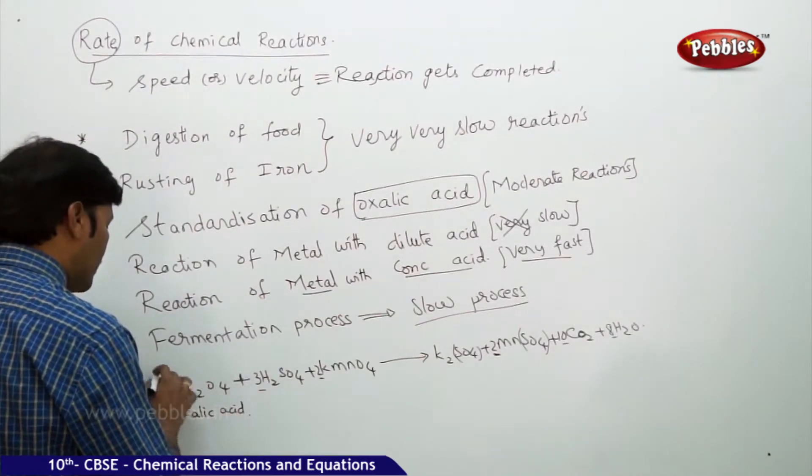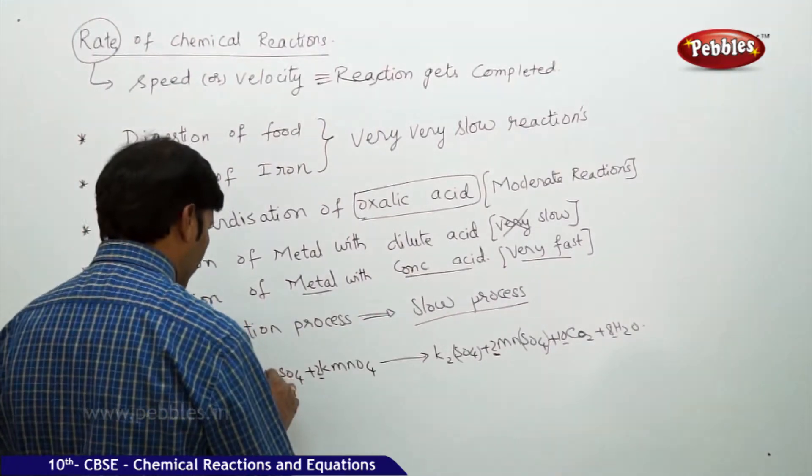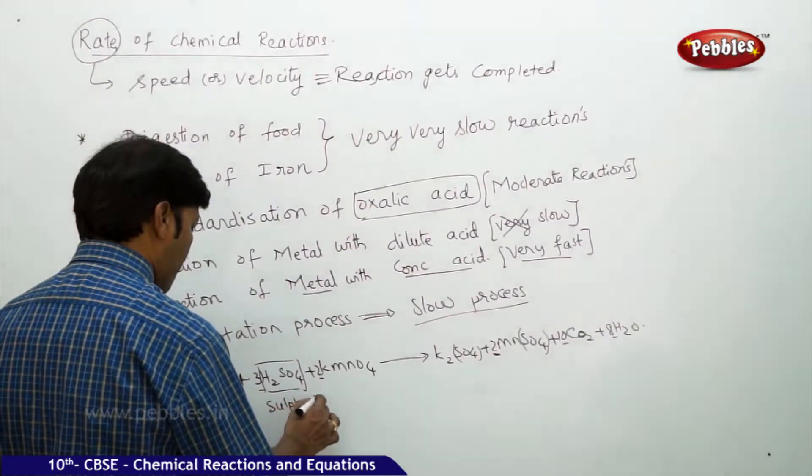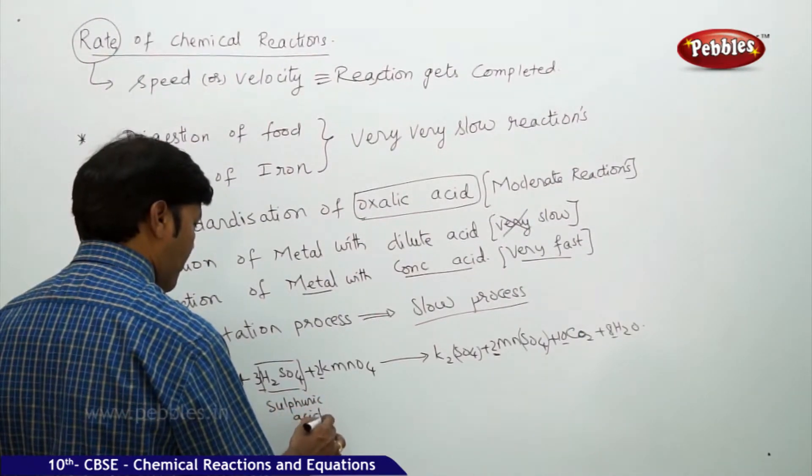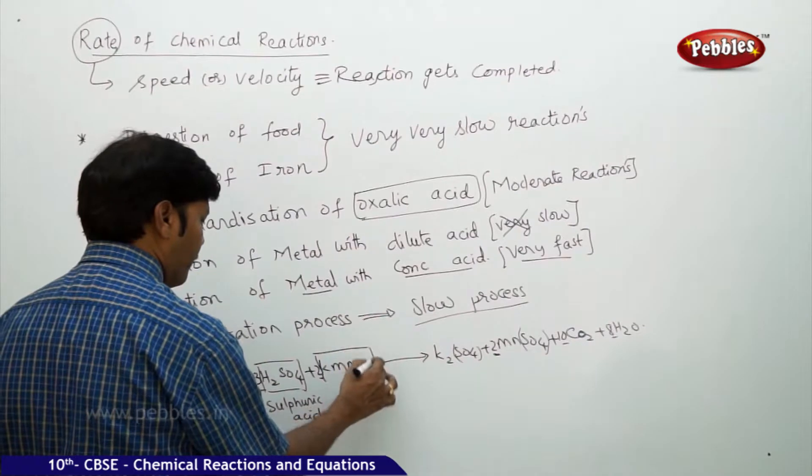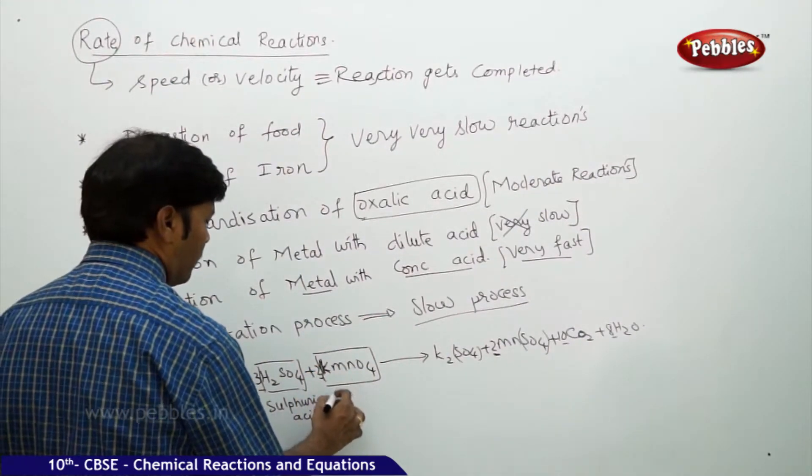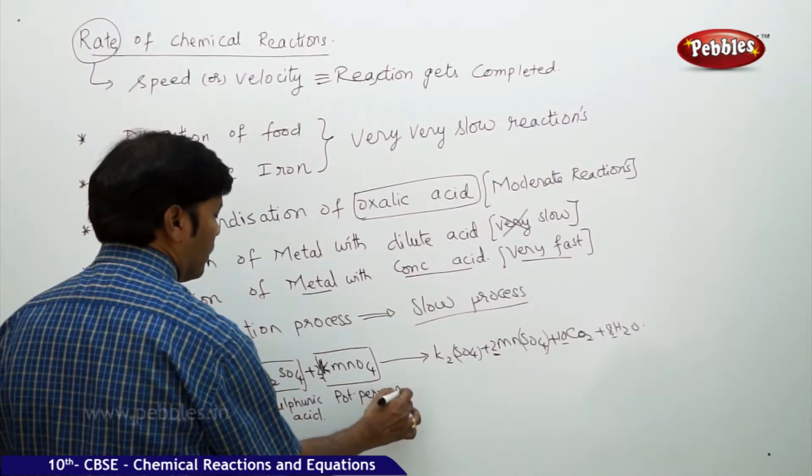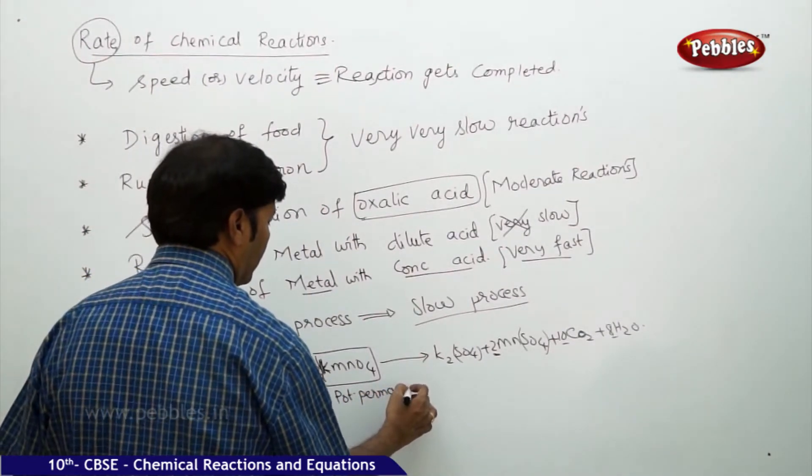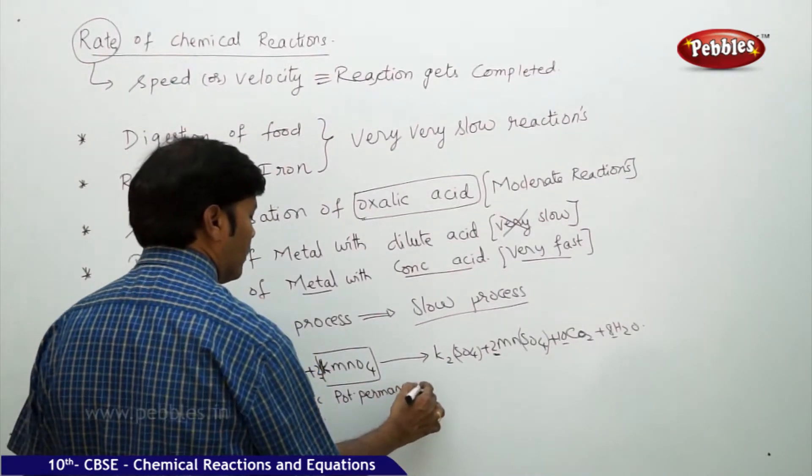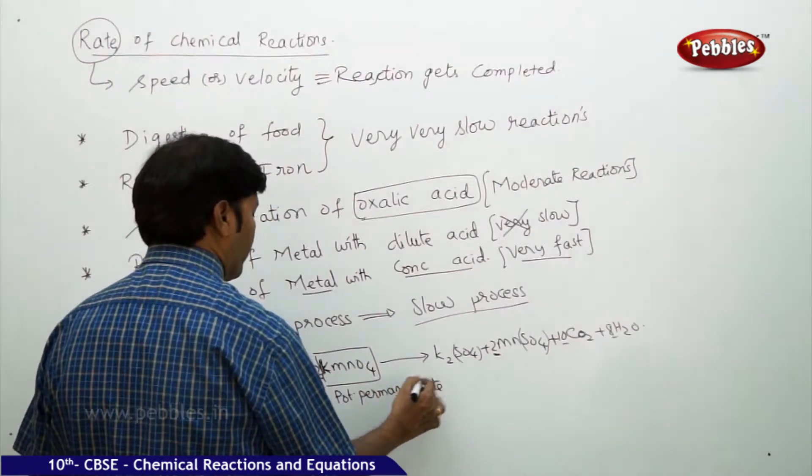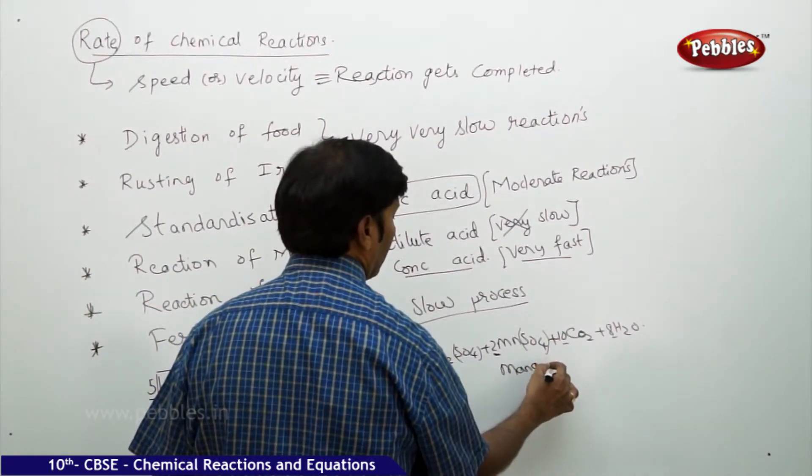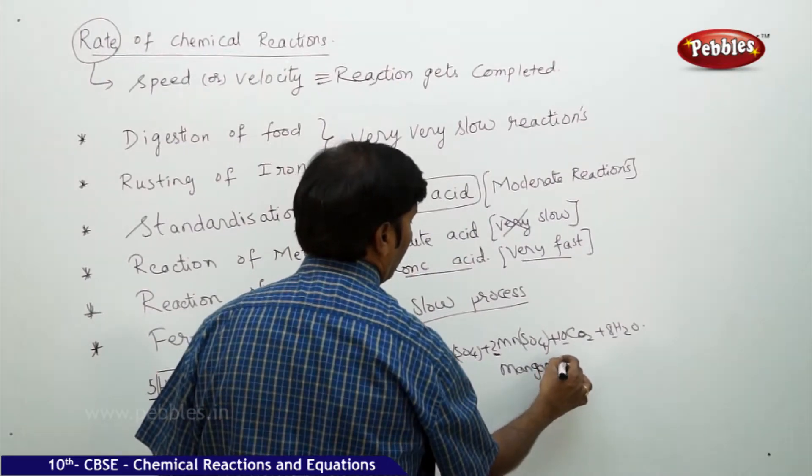So here what is happening - this is oxalic acid H2C2O4, and this is sulfuric acid, and this is potassium permanganate, and this is manganous sulfate.